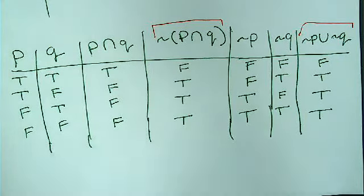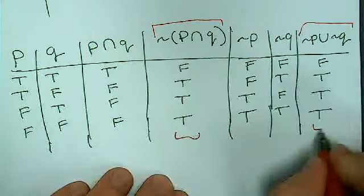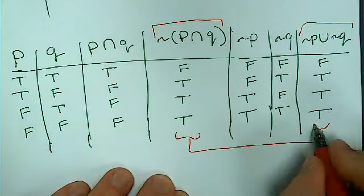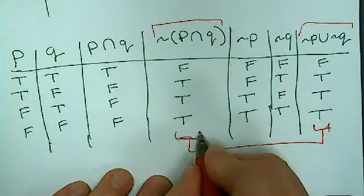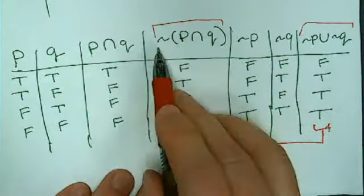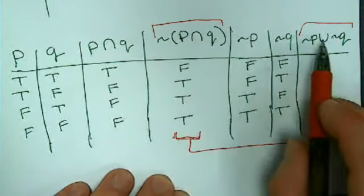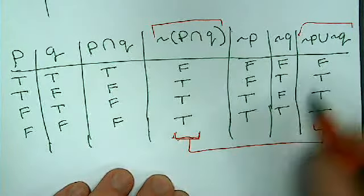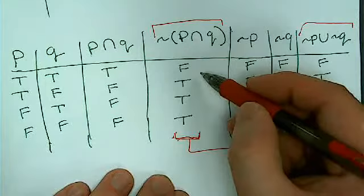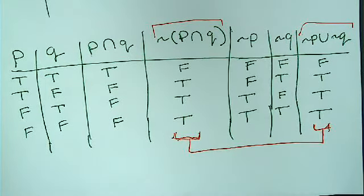This is actually a property that we talk about when we get deeper into the logic and into semantics. That not of P and Q is the same as not P or not Q. Because we have the same results when we look at the truth table. We end up at the exact same place.